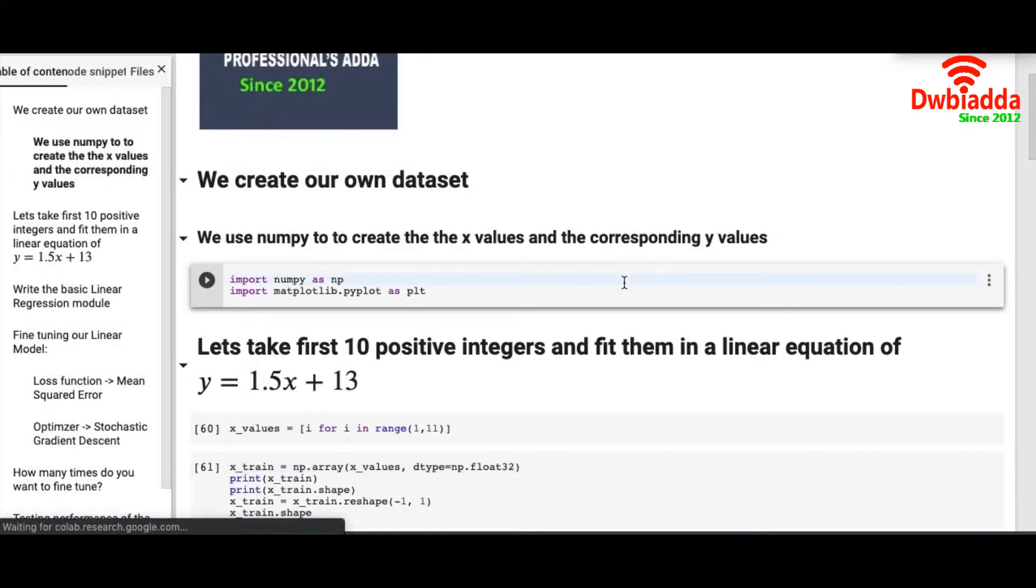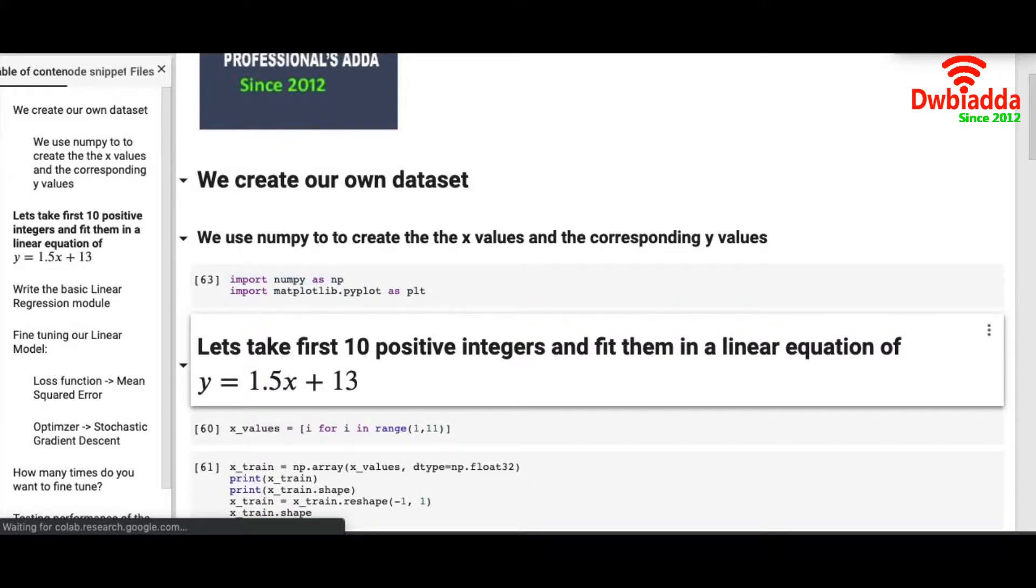To create our own dataset, we import numpy and to plot our data points, we import matplotlib.pyplot. We are taking first 10 positive integers from 1 to 10 and we are inserting those values in X, and we are getting the corresponding Y values from the equation 1.5X plus 13 which is a linear equation.